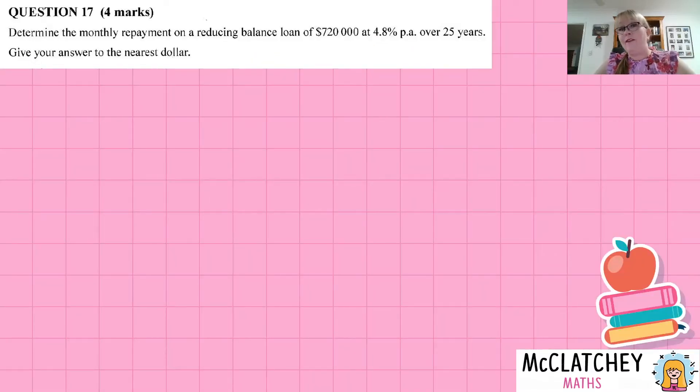Now we've moved off the multiple choice into paper one, and we're now doing some financial mathematics questions with short responses. This one's four marks. Determine the monthly payment on a reducing balance loan of $720,000 at 4.8% per annum over 25 years. Give your answer to the nearest dollar.